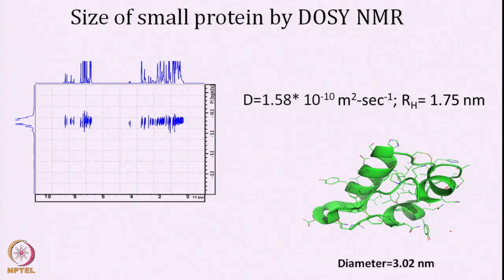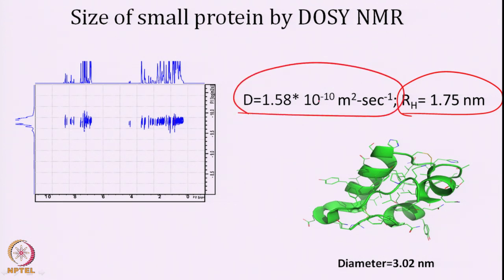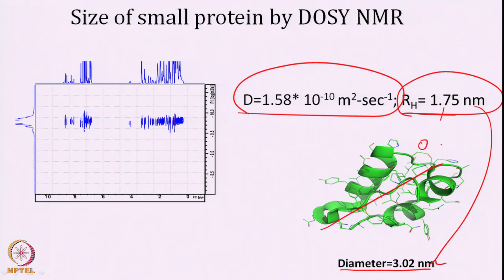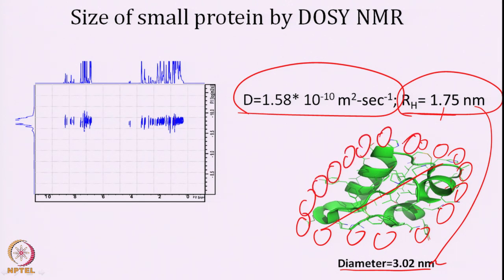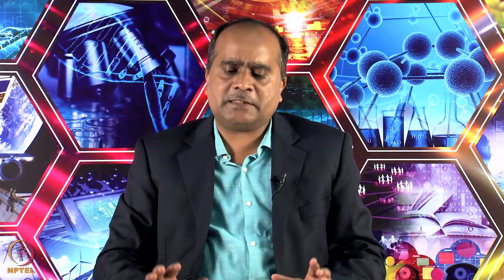For a small molecule example: DOSY gives a diffusion rate of 1.58 × 10⁻¹⁰ m²/s, which translates to a hydrodynamic radius of 1.75, giving a diameter of 3.2 when converted. This correlates well with the experimentally measured diameter. The molecule is solvated, so a slightly larger hydrodynamic radius is expected because water molecules surround it. The measured diameter of 3.02 nm correlates very well with the 3.5 nm value, demonstrating that diffusion-based NMR can measure hydrodynamic radii of small molecules accurately.